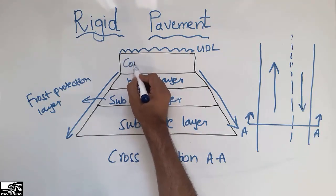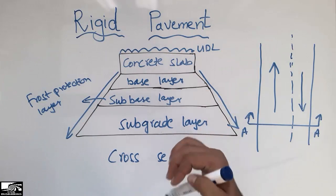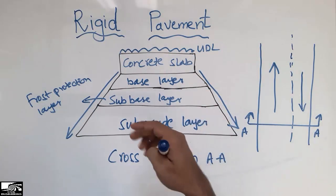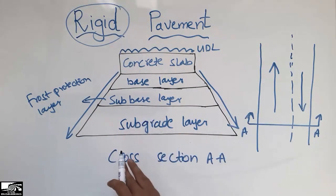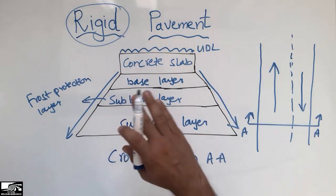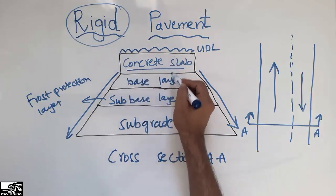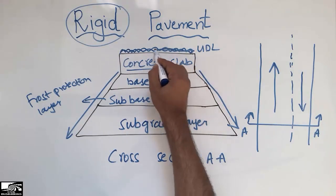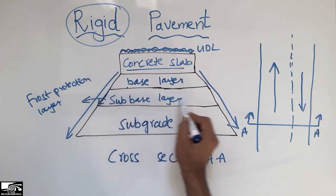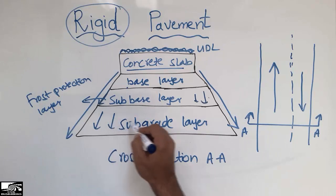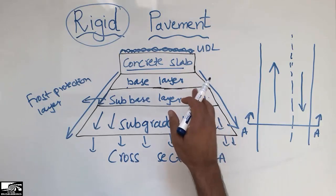The layer above the base layer is the concrete slab. We provide the concrete slab on top of the base layer so that the pavement has rigid behavior — that is why we call it rigid pavement. It doesn't have the ductility of flexible pavement. The load from vehicles — trucks, cars, buses — transfers from the concrete slab to the base layer, then to the subbase layer, and finally into the subgrade and the natural soil below.